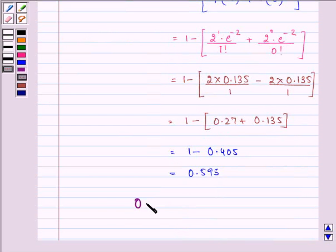The answer to this question is 0.595. This is the probability that 2 or more people of a random sample of 25 from the group are left-handed.